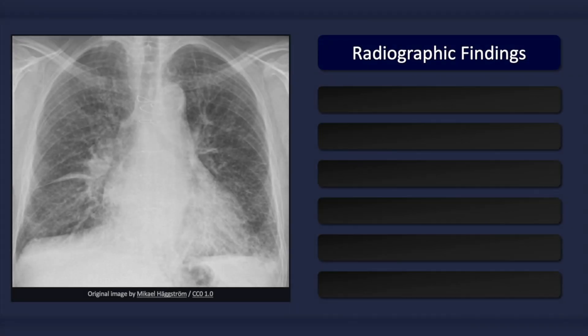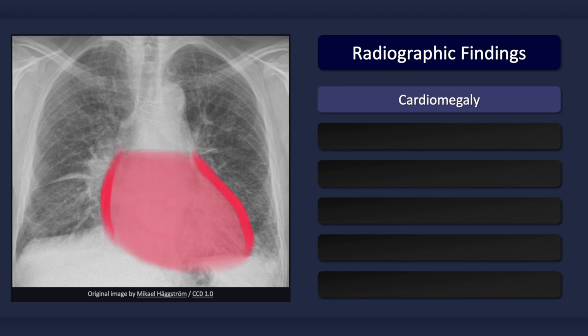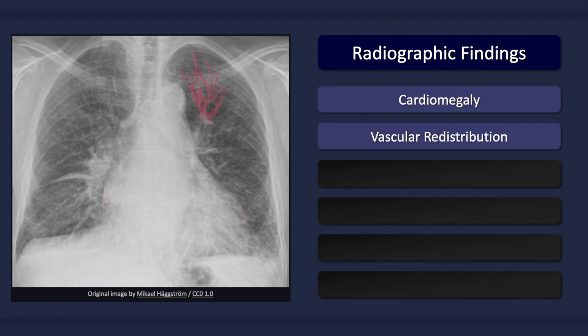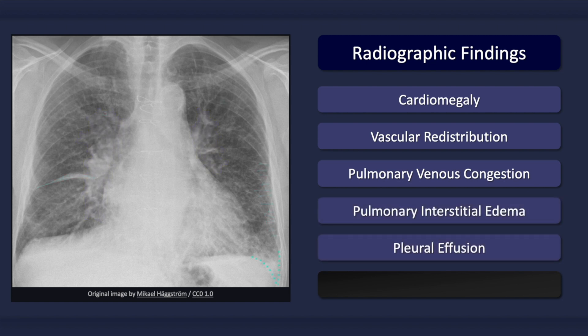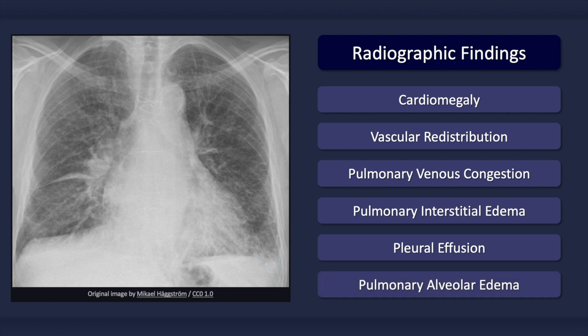Congestive heart failure can produce a myriad of findings on plain chest radiography, and which findings are present depends on the severity of the patient's condition. On an erect posterior-anterior chest x-ray, suggestive findings include cardiomegaly, which does not necessarily need to be present, vascular redistribution or cephalization of blood flow, pulmonary venous congestion, pulmonary interstitial edema, pleural effusions, and in more severe disease, alveolar edema.